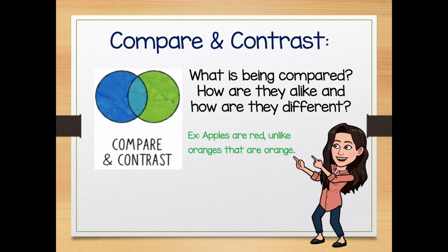The next one we're pretty familiar with, and that's comparing and contrasting. What is being compared in the text? How are they alike and how might they be different? We compare and contrast things all the time, whether it be in science or math. For my example: 'Apples are red, unlike oranges that are orange.' Did I compare or did I contrast the fruits? I contrasted the fruits. Comparing is how things are alike and contrasting is how they are different.